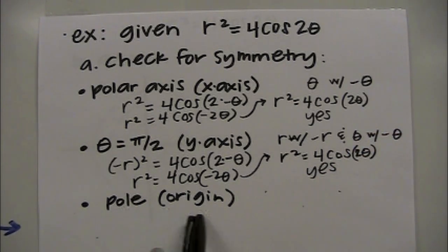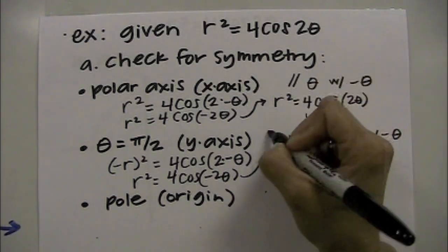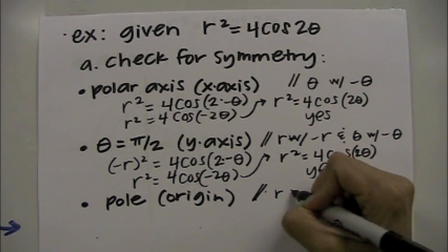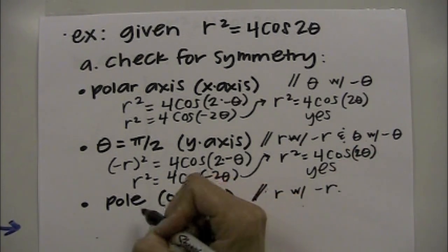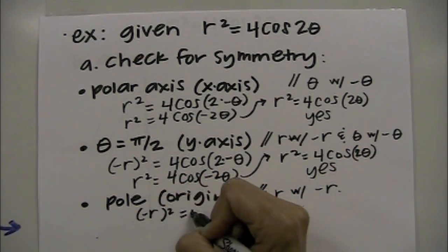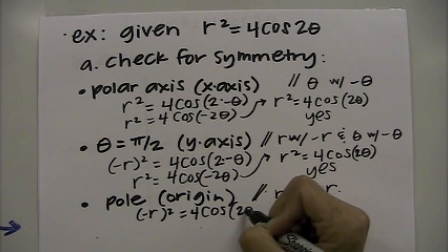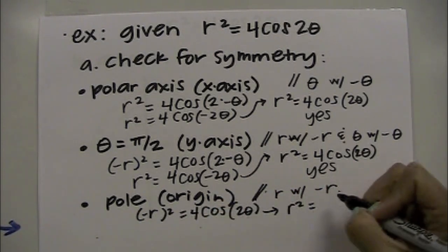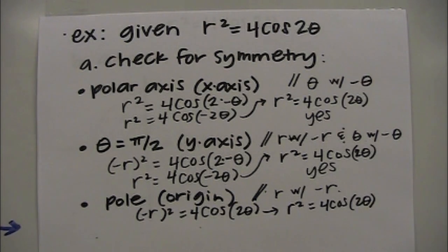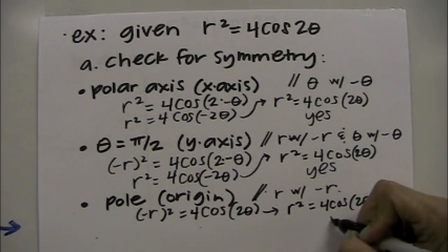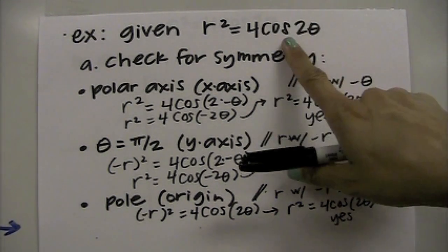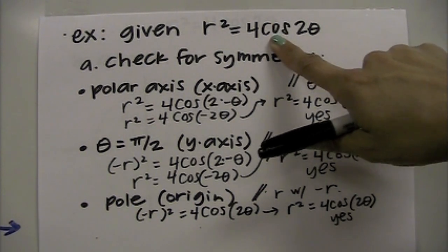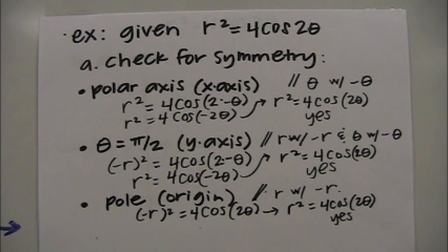For the last symmetry check — the pole — replace r with negative r. Squaring negative r gives r², so you get r² equals 4 cosine of 2θ, which is the same as the original equation. So this does have symmetry with respect to the pole. Just as the chart indicated, the cosine equation has symmetry for all three: x-axis, y-axis, and origin.